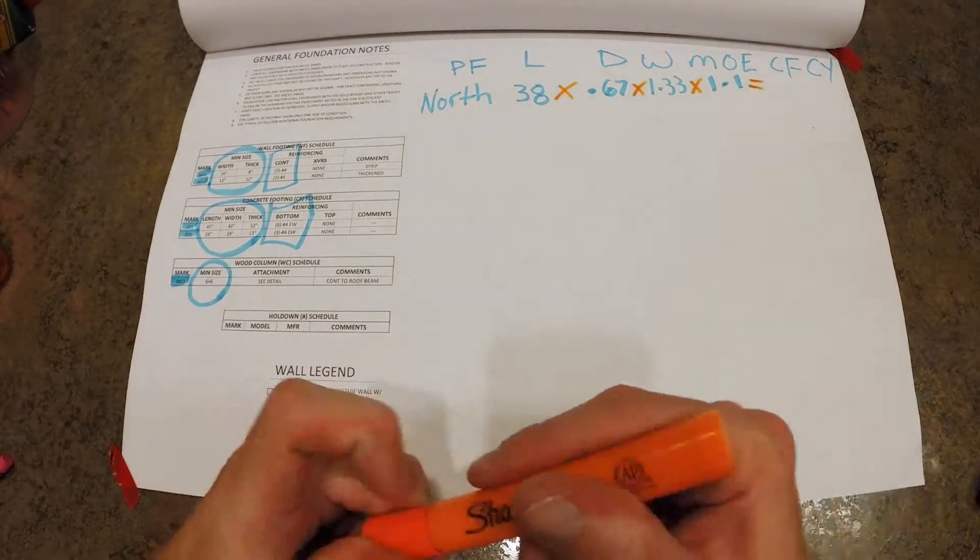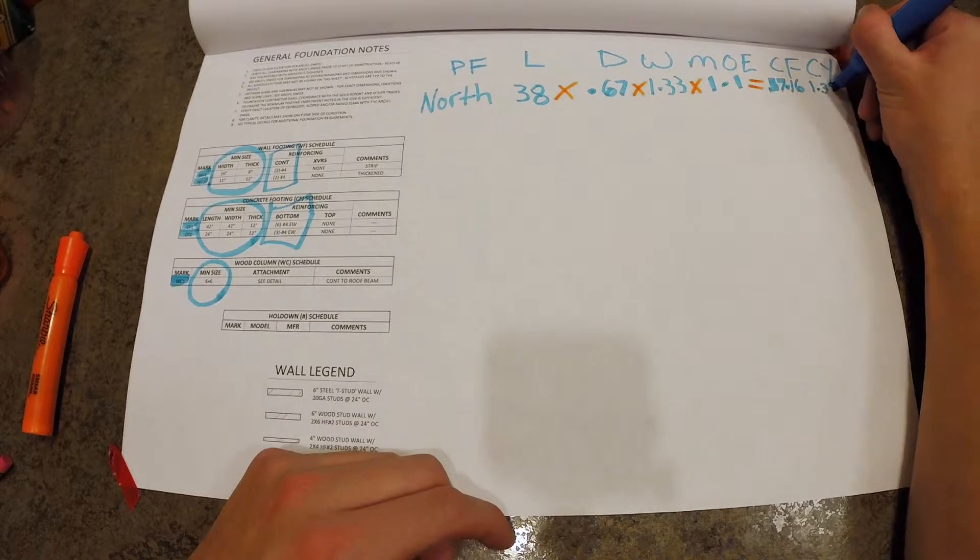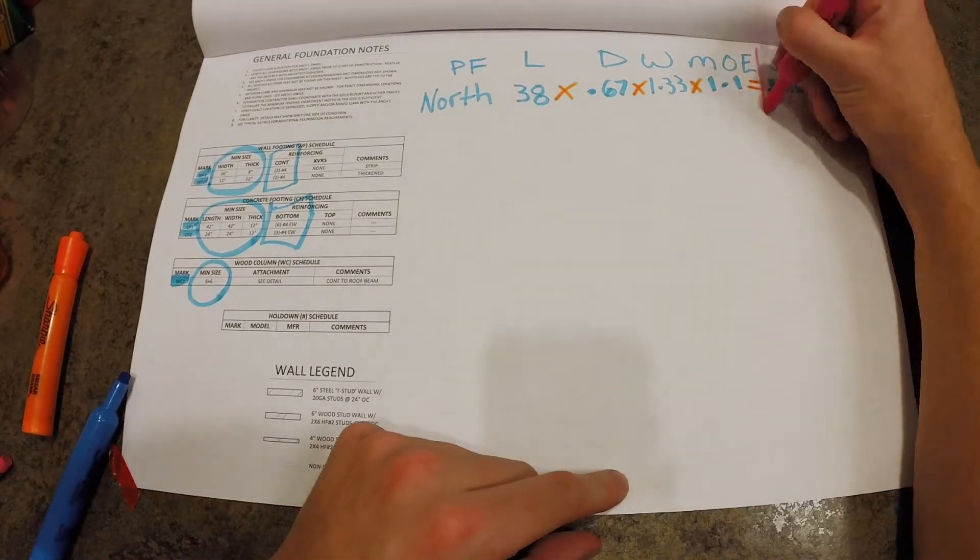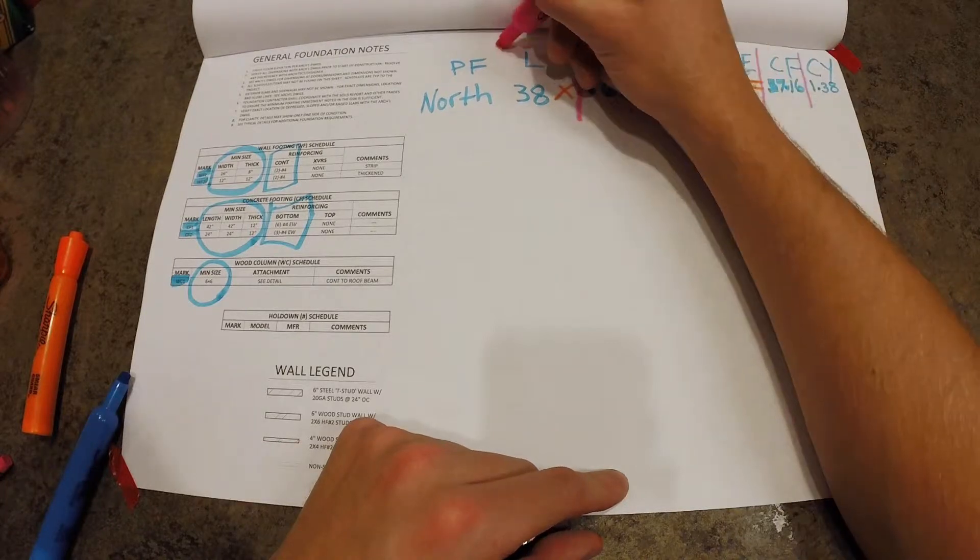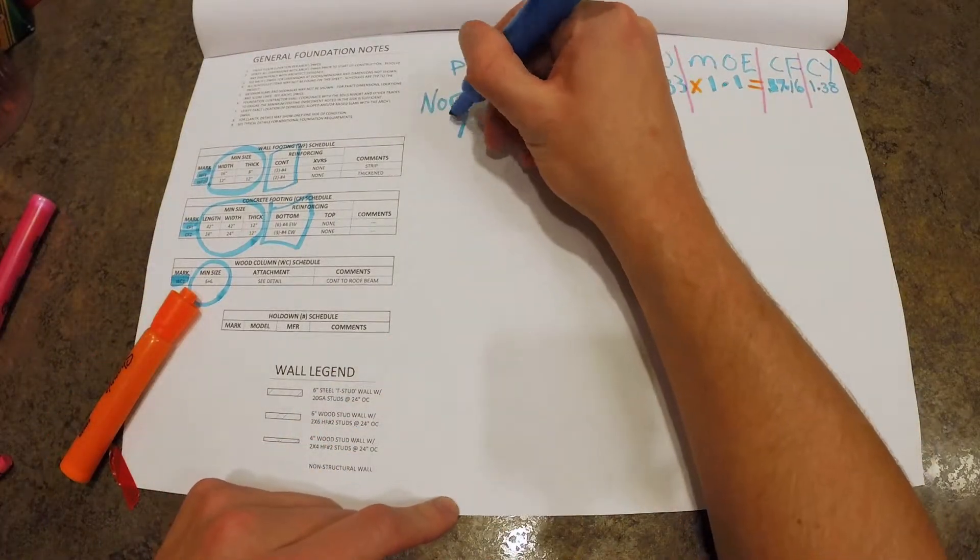When you do the math, it's going to give us cubic feet of 37.6, which are cubic yards of 1.38. Now we're going to go ahead and do this for all of our walls. But for the sake of brevity, we're going to skip that.